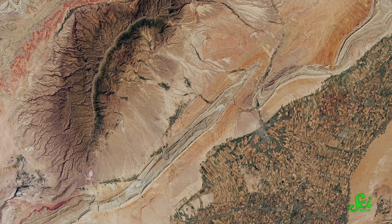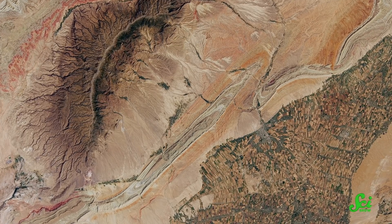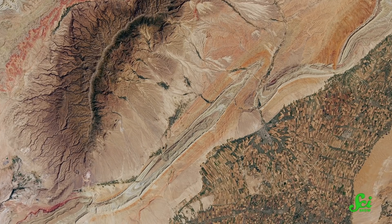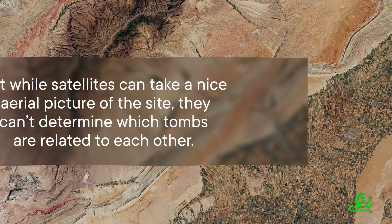In the case of the tombs in Sudan, archaeologists realized they could use a statistical tool to model how the tombs were arranged — one that had previously been developed to model stars. Satellites have been used in archaeology before to get an eagle-eye view of remote regions where exploration could be challenging, and the site in Sudan would be a perfect candidate for satellite work.